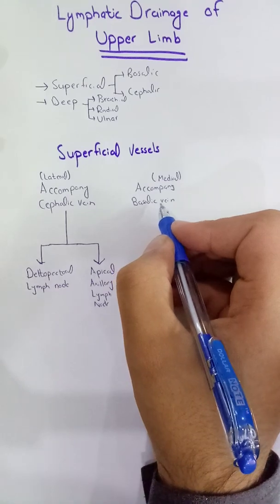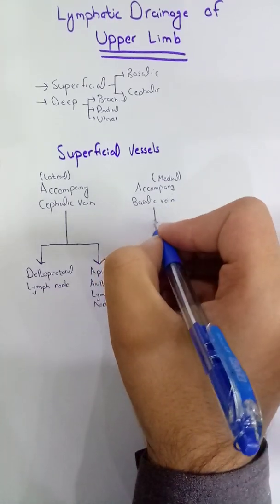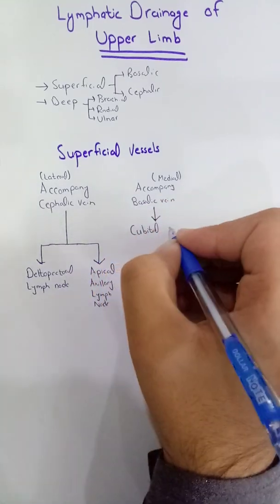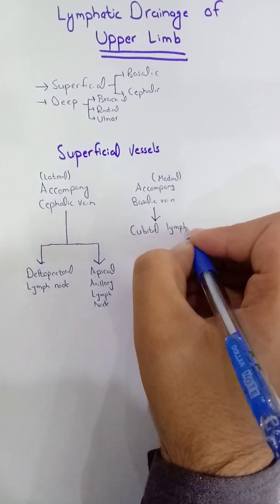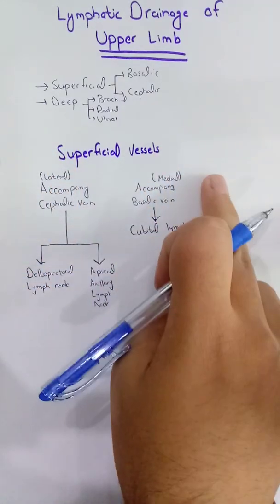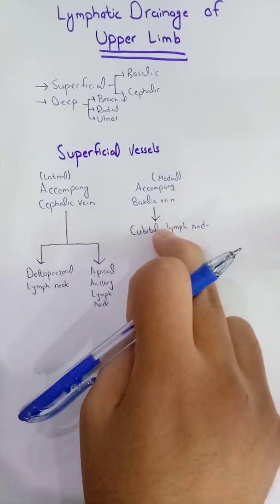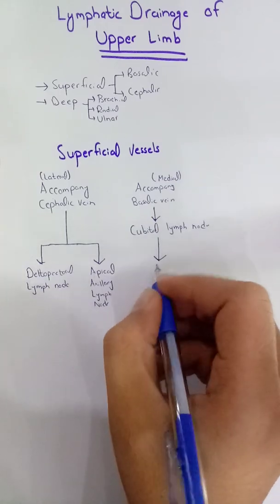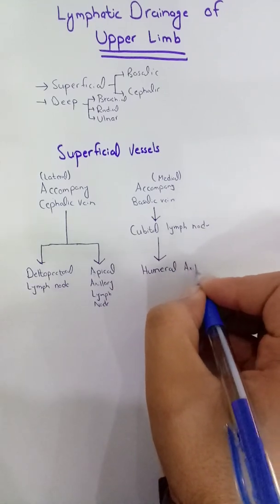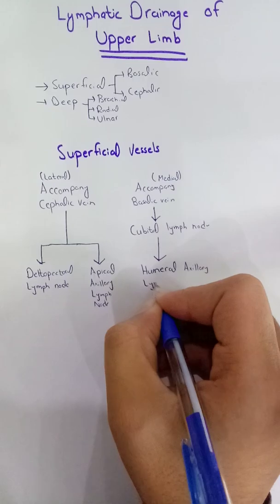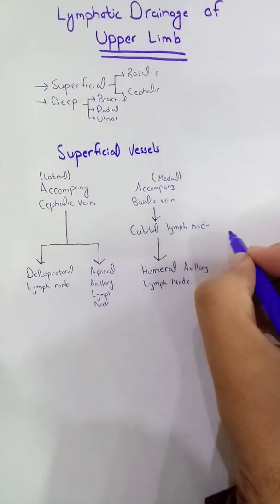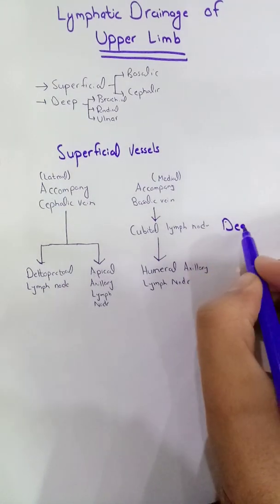The lymph vessels accompanying the basilic vein first drain into the cubital fossa lymph nodes. From these cubital lymph nodes, the lymph then moves to the humeral axillary lymph nodes, which are present in the axillary fossa. So on the lateral side, lymph drains directly into the axilla, while on the medial side it first passes through the cubital lymph nodes.